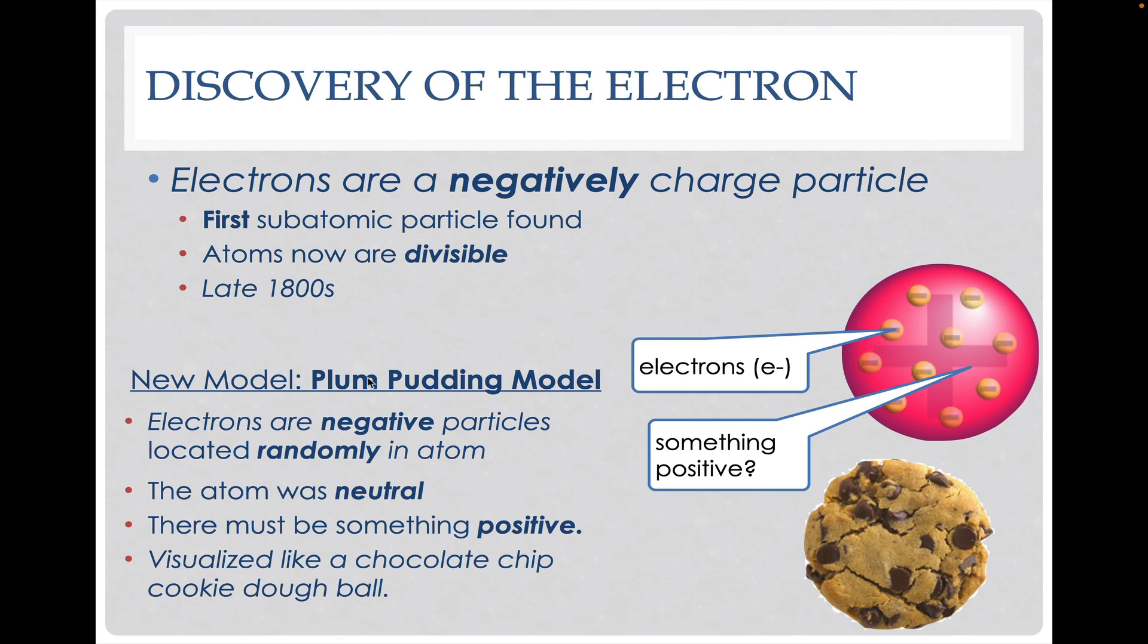After the discovery of the electron, we made a new model called the plum pudding model. Basically it looked like this where we're going to have a positive goo with negative electrons kind of put into it. I kind of visualize it as a chocolate chip cookie. We know the negatives are electron charges and we think they're randomly located inside. The atom was neutral, so we had to have that positive thing to balance it, but we didn't know what that positive thing was yet.